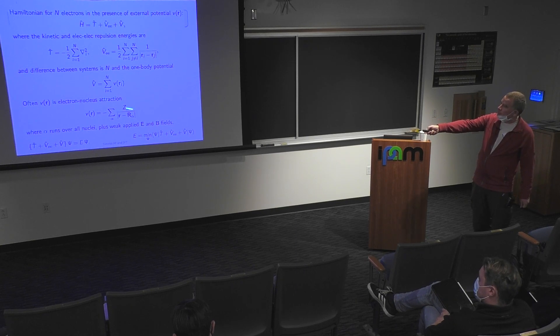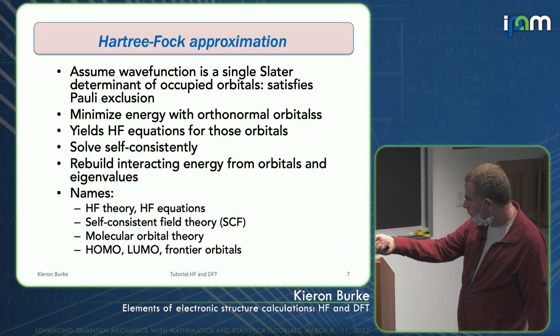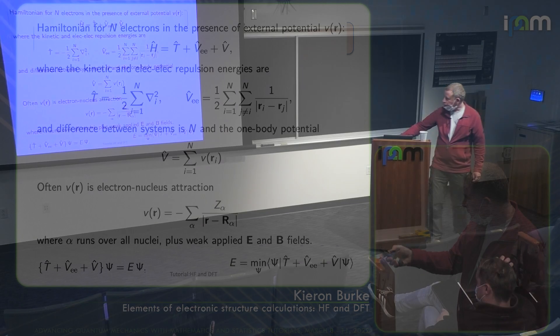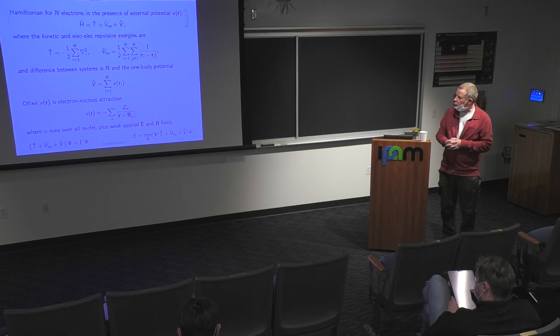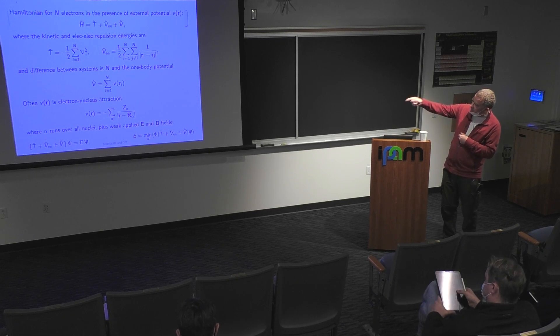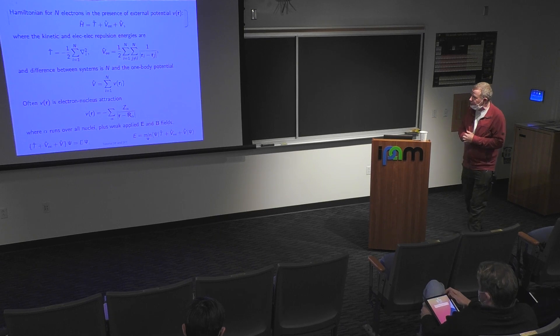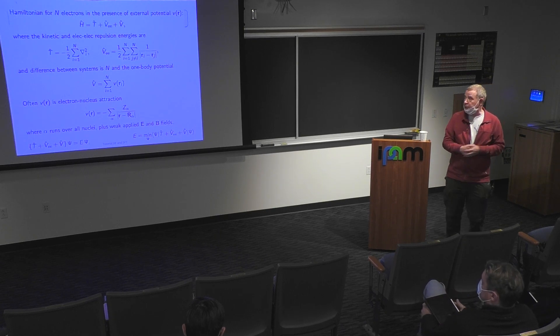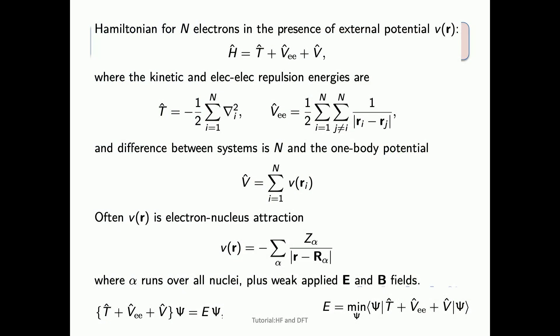The only difference between systems is the one-body potential, which can be characterized by the nuclear charges Z_alpha and positions R_alpha of the nuclei. So all the different systems just have different V's. The kinetic energy T and the electron-electron repulsion V_ee are always the same.